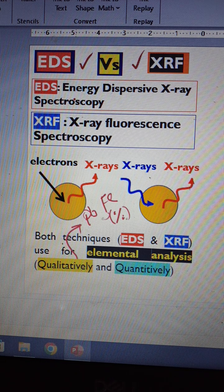EDS stands for Energy Dispersive X-ray Spectroscopy, and XRF stands for X-ray Fluorescence Spectroscopy.